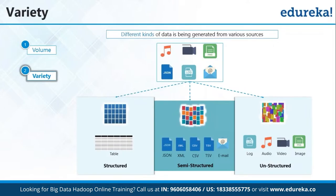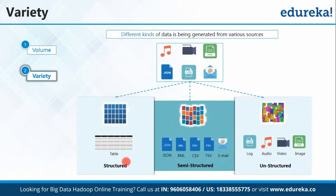Looking at the diagram on screen: we have audio, video files, PNG files, JSON, log files, emails — various formats of data. This data is classified into three forms. Structured format has a proper schema with defined columns. Semi-structured files include JSON, XML, and CSV where schema is not defined properly. Unstructured format includes log files, audio files, videos, and images. And it is because of the speed of accumulation of all this variety of data that we arrive at our third V — Velocity.